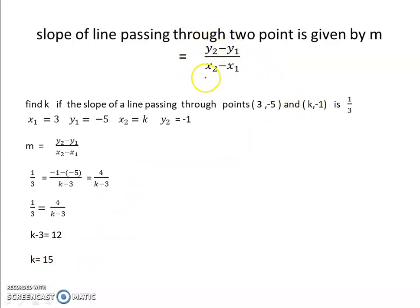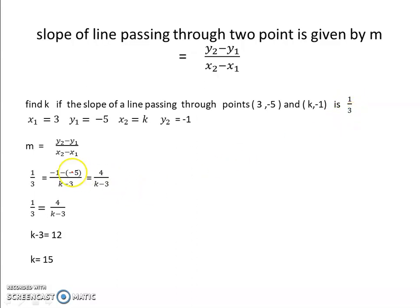We can verify by substituting k equal to 15 back into the formula y2 minus y1 upon x2 minus x1. y2 is minus 1, y1 is minus 5, so minus 1 minus (minus 5) gives minus 1 plus 5 equal to 4. x2 is 15 and x1 is 3, so 15 minus 3 equals 12. Therefore m equal to 4 upon 12 equal to 1 upon 3. Our answer is correct, confirming k is equal to 15.